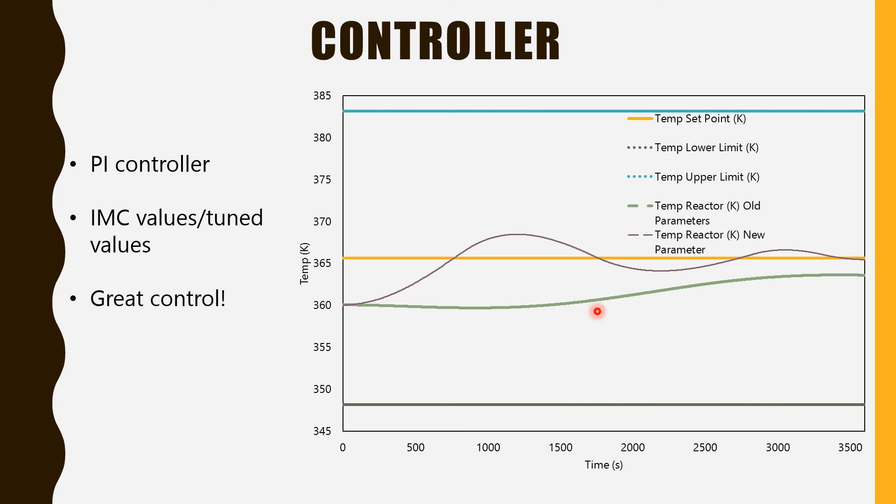This green line right here is our first response to the control. We found that it's very slow and it's over damped and never reaches the actual set point. So, we manually adjusted the values to get a better response, which is this line right here. We found that the rise time is about 15 minutes, and that it decays pretty fast, hence a better response for our system.